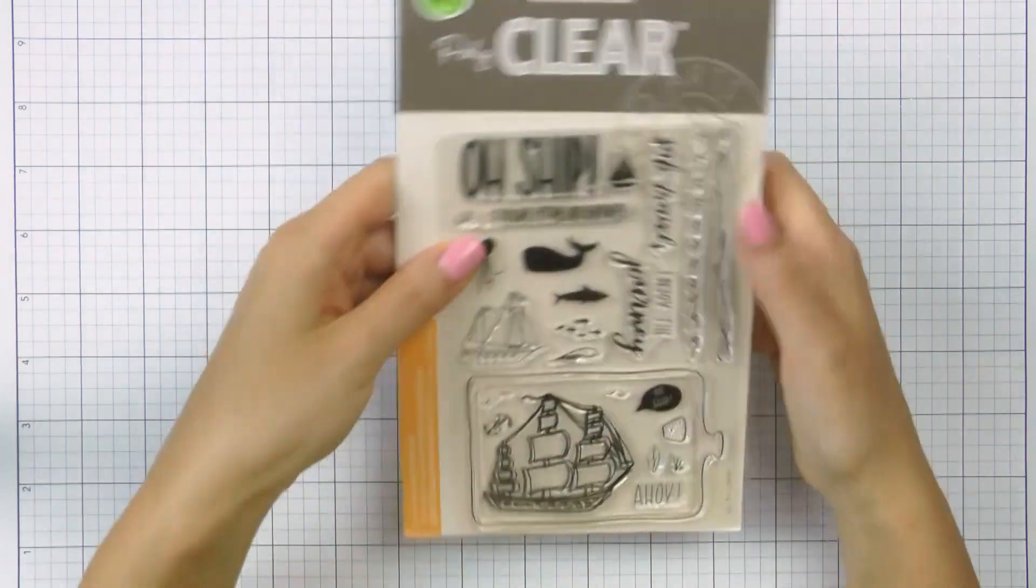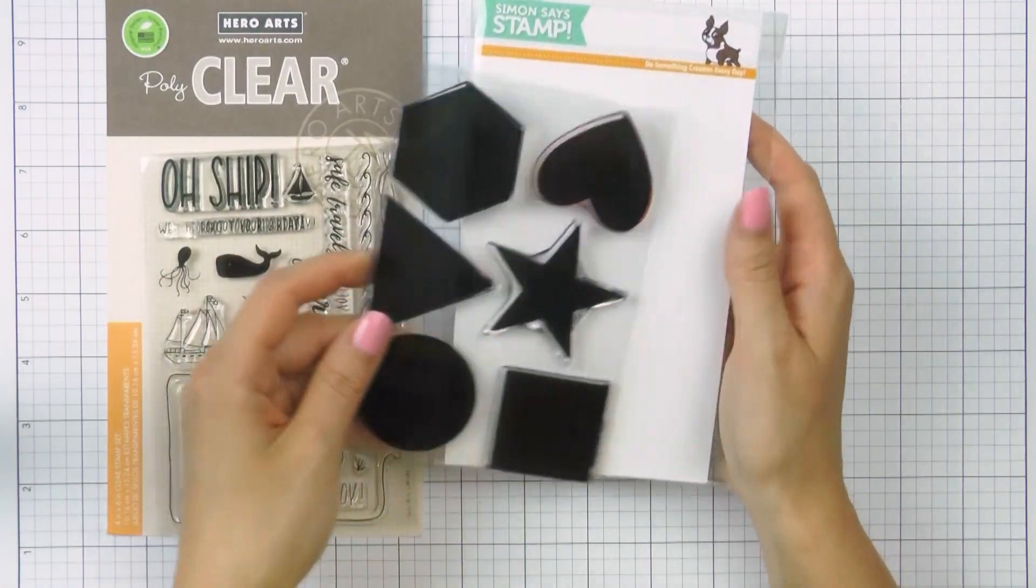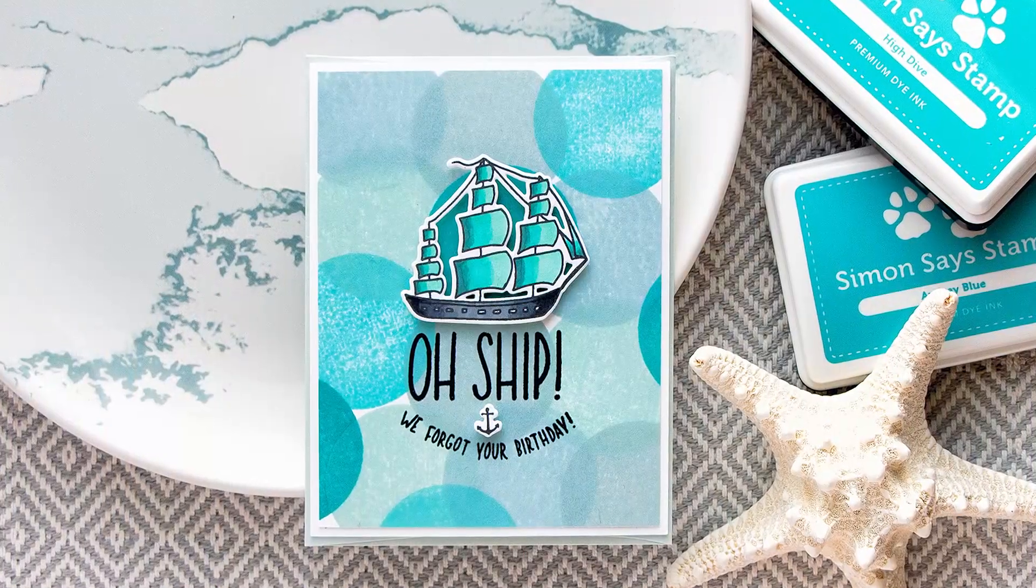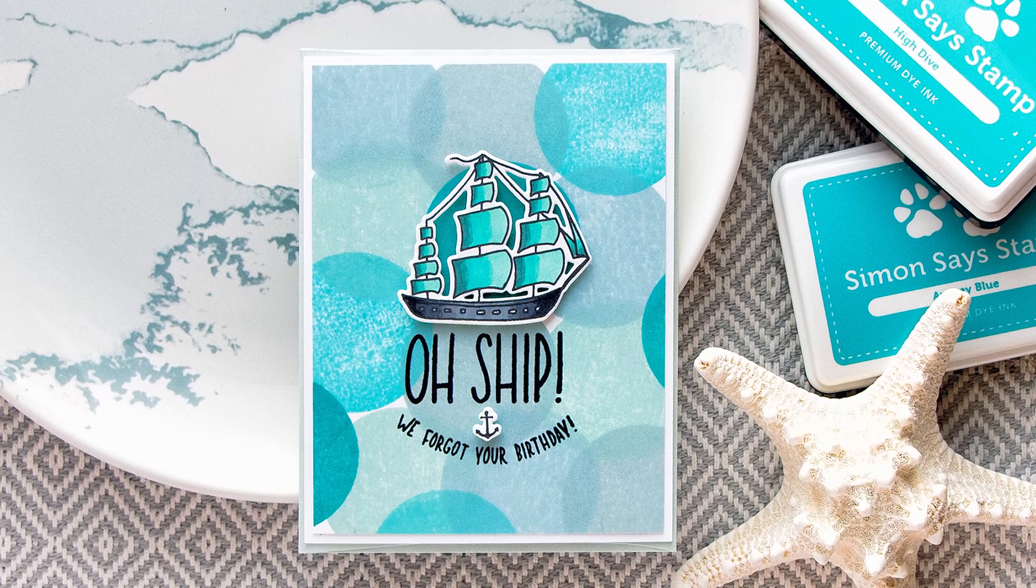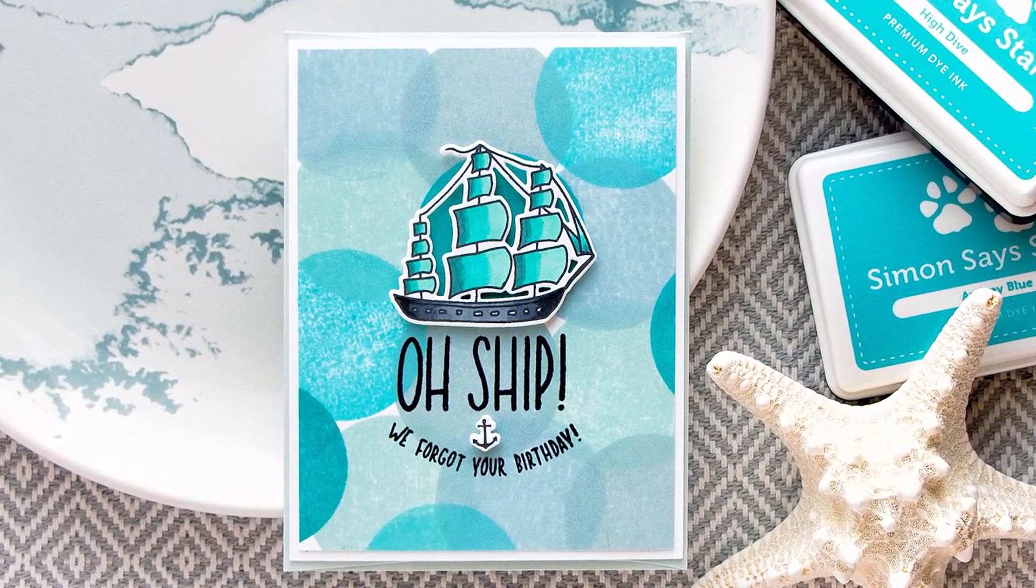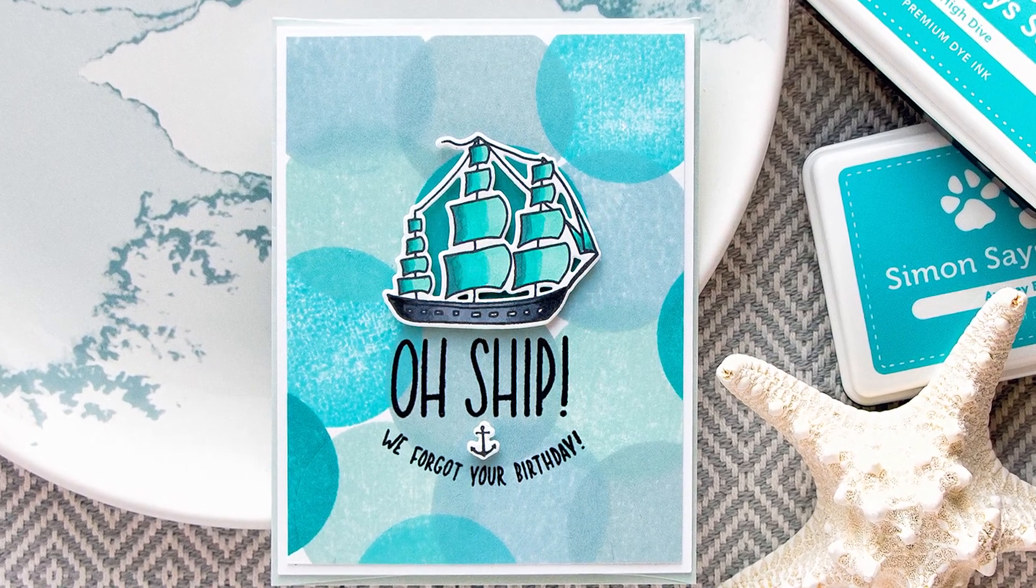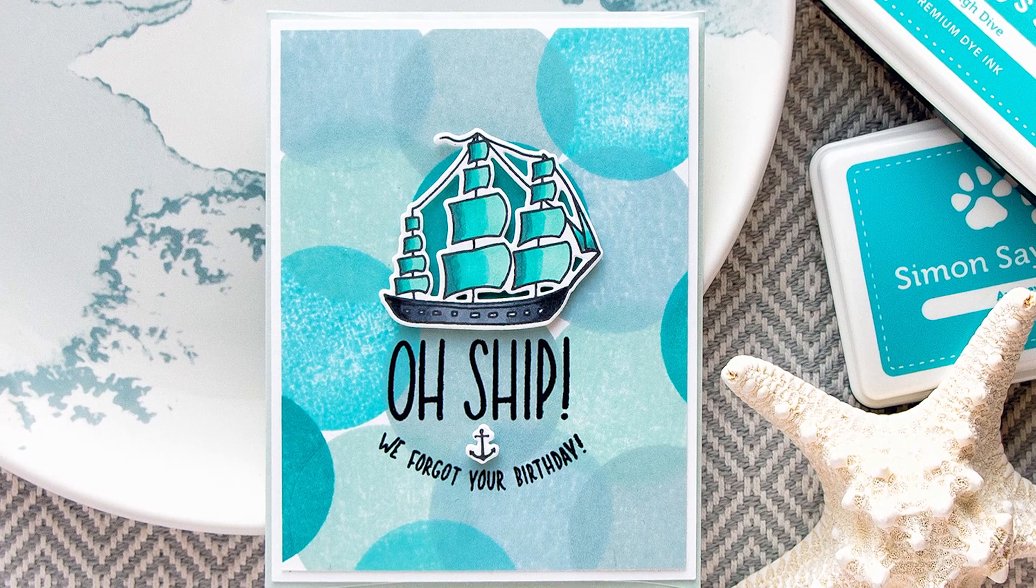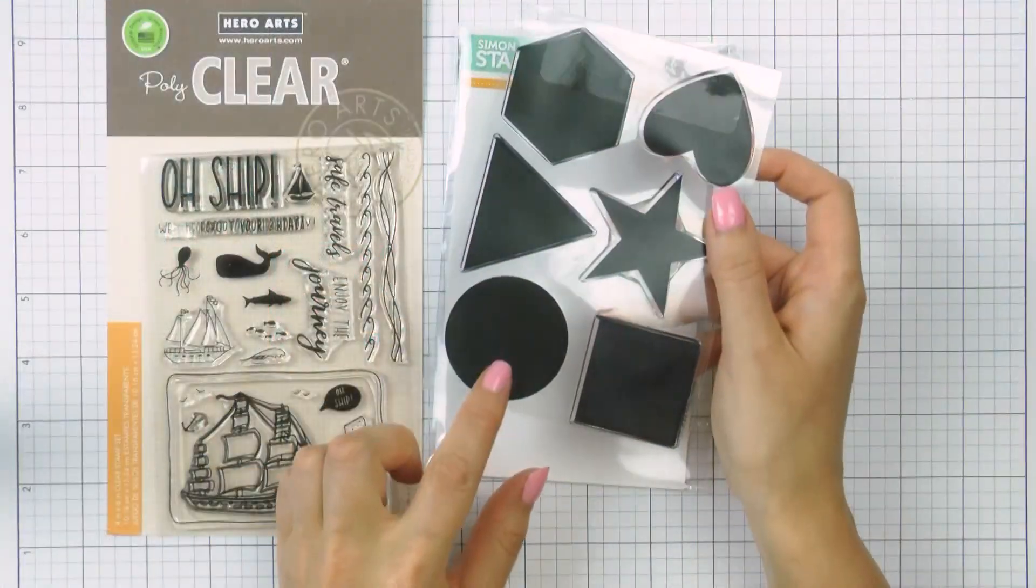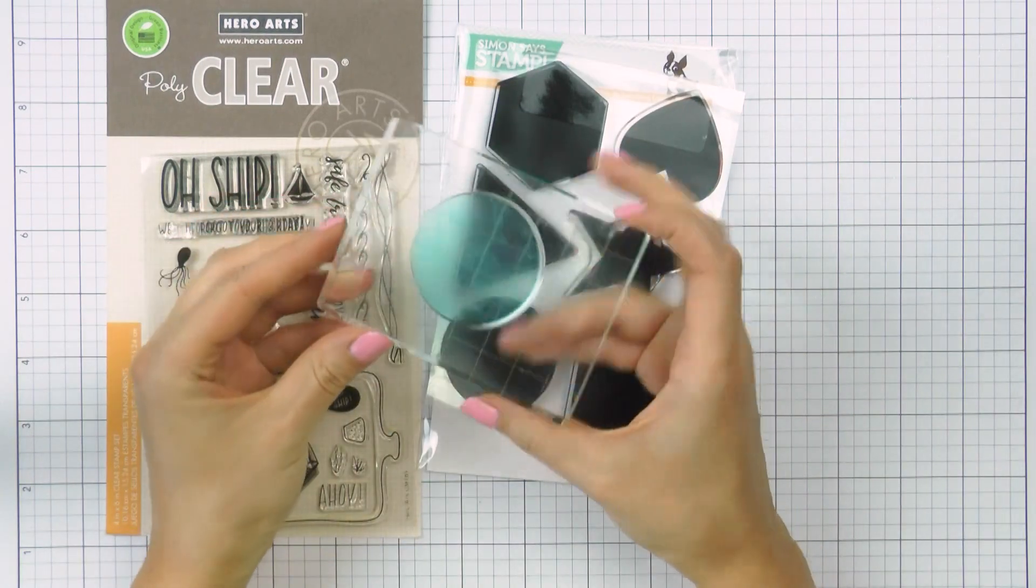Another stamp set that I will be using today is the new Big Perfect Shapes stamp set from Simon. This set features a set of rather simple geometric shapes. In my book, however, the simpler the better. I love to use simple shapes for my projects as there's just no limit to the things you can do with them. You might remember my video tutorial from a few months ago where I used Simon's Tons of Hearts stamp set and stamped a number of different backgrounds for everyday cards. So this is just another set of must-have shapes in my book.